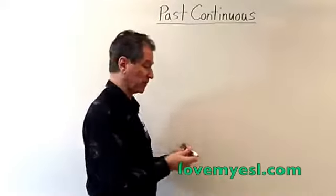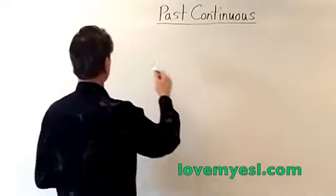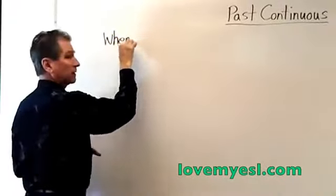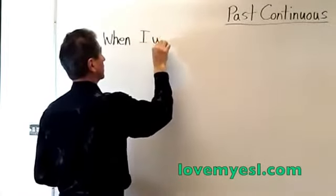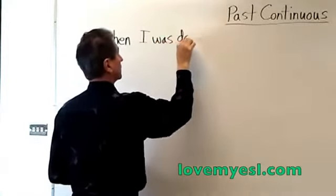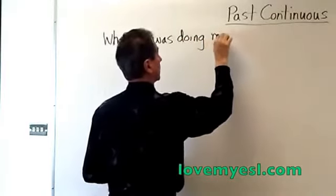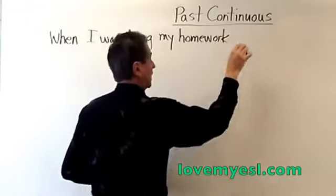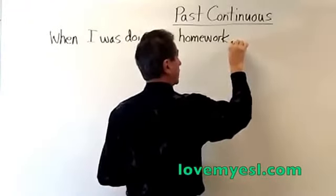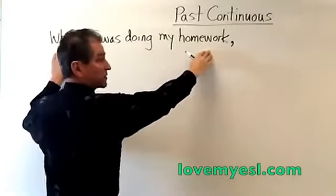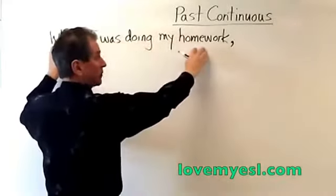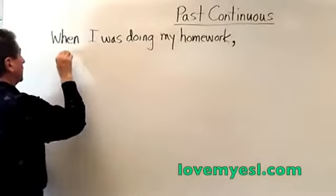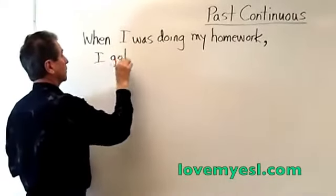Let me give you some examples using three words. The first word I'm going to use is 'when.' When I was doing my homework — and because I started with 'when,' I'm going to have a comma here. This is called a dependent clause, and the kind of dependent clause it is, is an adverb clause, because I'm starting with a time word here. When I was doing my homework, I got really tired.